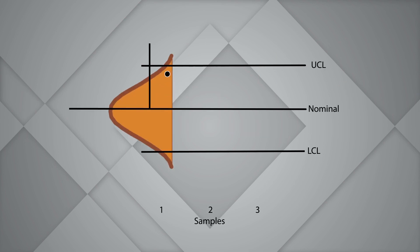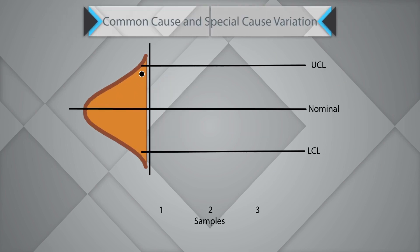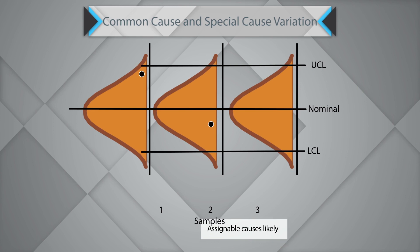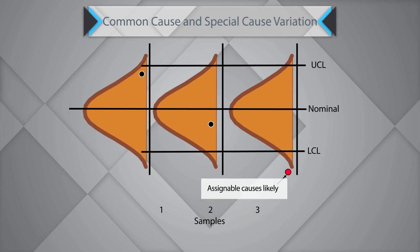To understand control charts, one must understand the concept of common cause and special cause variation. Any variation in the business process which lies within the UCL and LCL is considered to be driven by common cause variation. Any data point going outside the UCL-LCL is considered to be driven by special cause variation, also referred to as assignable cause variation. The cause behind such behavior must be studied and root cause analysis must be done.